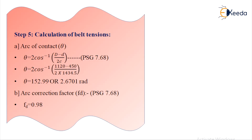Step 5: Belt tension calculation. First, calculate arc of contact θ = 2·cos⁻¹[(D − d)/(2C)] = 2·cos⁻¹[(1120 − 450)/(2 × 1434.5)] = 152.99° = 2.6701 radians. Arc correction factor Fd = 0.98 from PSG data.